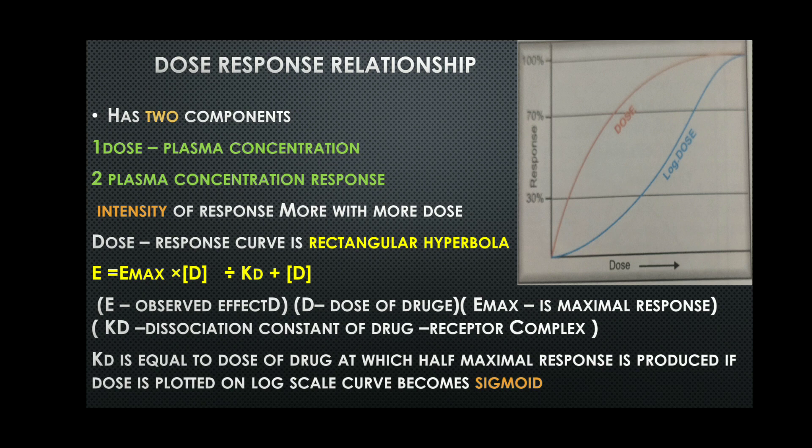The formula to measure the observed effect is: E = Emax × D / (KD + D). Here, E is the observed effect, D is the dosage of the drug, Emax is the maximal response that can be produced, and KD is the dissociation constant of the drug-receptor complex.